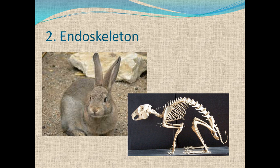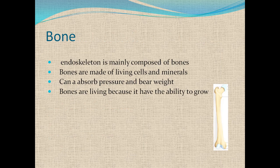Endoskeleton: this kind of skeleton is present inside the body, and the muscles are attached to the outside. This is the reason this skeleton is called the endoskeleton. The endoskeleton is mainly composed of bones of different sizes and shapes. The endoskeleton has the ability to grow in size and it is living.